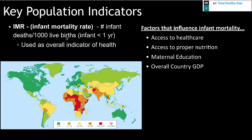Another key population indicator is infant mortality, used as a measure of a country's overall health alongside life expectancy. It is defined as the number of infant deaths per 1,000, where an infant is one year of age or less. Factors influencing infant mortality include access to healthcare, access to proper nutrition, maternal education, and a country's overall GDP — economic growth tends to correlate strongly with these factors.